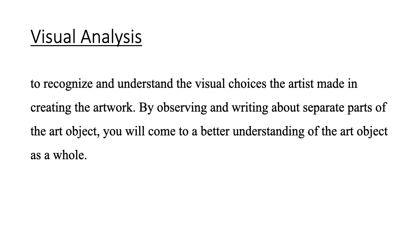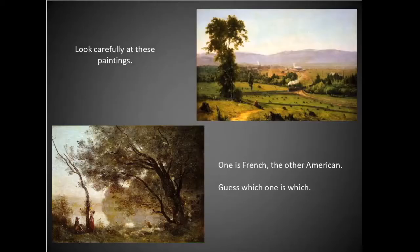What we just did was something known as visual analysis. Write down the definition: to recognize and understand the visual choices the artist made in creating the artwork. By observing and writing about separate parts of the art object, you will come to a better understanding of the art object as a whole. We're going to continue practicing visual analysis — looking at these two images here. One is French, the other is American. Guess which is which?